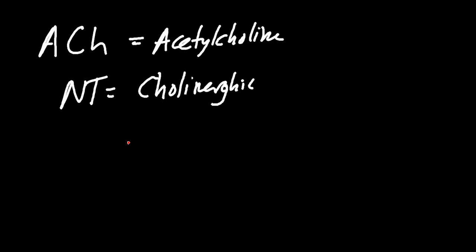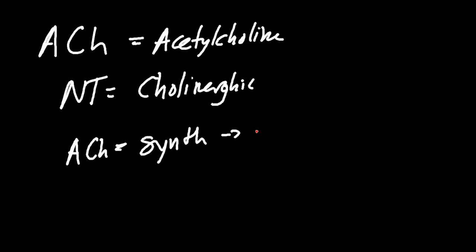Unlike some other neurotransmitters, acetylcholine is going to be synthesized, then stored, and then released. So let's go over some of the basics of acetylcholine synthesis, storage, and release, and then we can talk about some of the different drugs that interact with it and some of the problems that can go wrong.